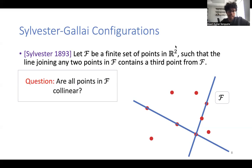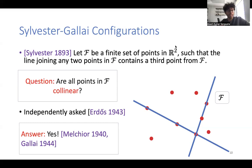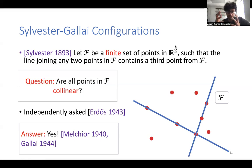This question was also independently asked by Erdős, and the answer turns out to be yes — it was answered by Melchior and Galai independently. The crucial thing here is that we are dealing with a finite set of points. For an infinite set of points, one could have a non-linear configuration, but the finiteness of the set of points constrains the configuration to be on the same line.